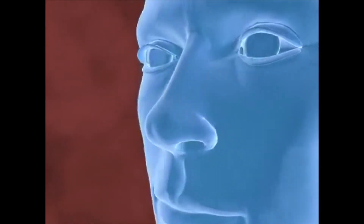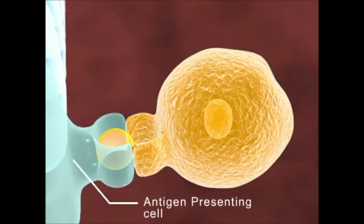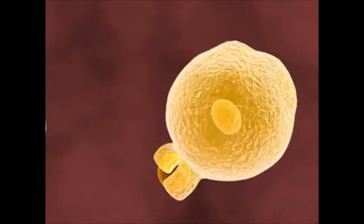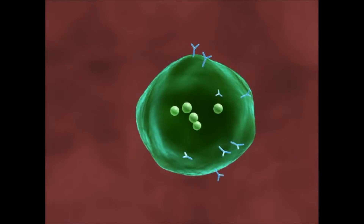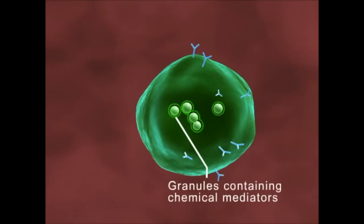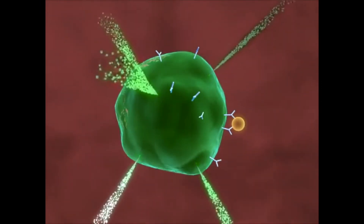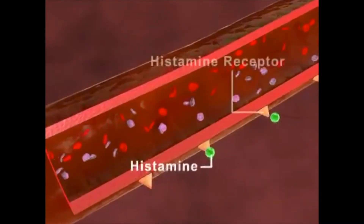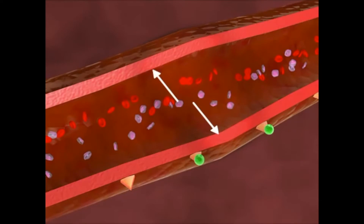On first exposure, the inhaled allergen enters the mucous membrane lining the nasal passages, where it is taken up by the antigen presenting cell, which presents it to the T cells. These T cells activate the B cells to release substances called IgE antibodies against the allergen. These IgE antibodies sit on the surface of the mast cells. The mast cells have granules containing chemical mediators like histamine and prostaglandins. On exposure, the allergen binds to the IgE antibodies present on the mast cells, crosslinking them. This results in the release of histamine, prostaglandins and other mediators into the surrounding tissue. These mediators cause dilation of the surrounding blood vessels and increase their permeability. This results in the nasal stuffiness, sneezing and mucus discharge of allergic rhinitis.